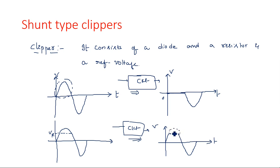The same clipping action can also appear on the negative side — the negative peak can be clipped entirely, or only part of the negative signal can be eliminated. This type of action is generally referred to as clipping.